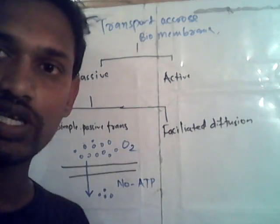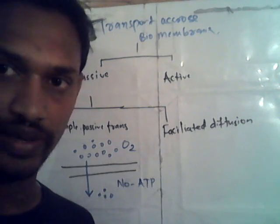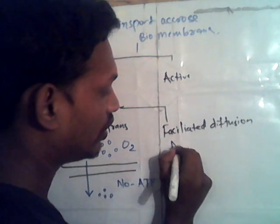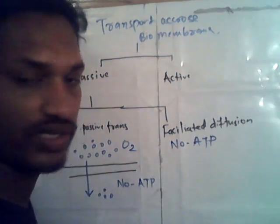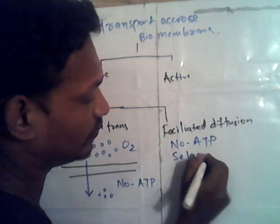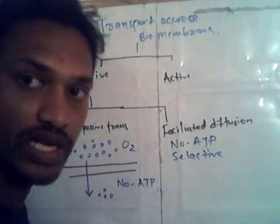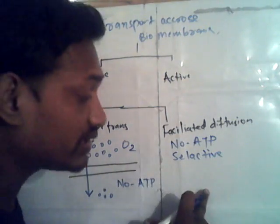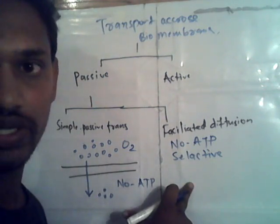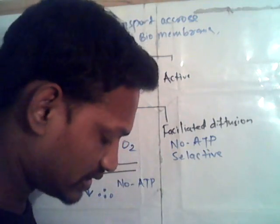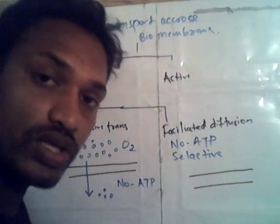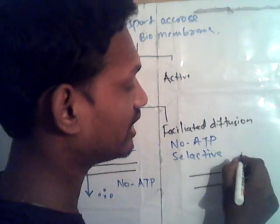What happens inside facilitated diffusion? It requires no ATP. But it is selective in nature — it selects which ions are allowed to enter and which are not. In this case, the solute also moves along the concentration gradient. The concentration gradient must be higher outside and lower inside.